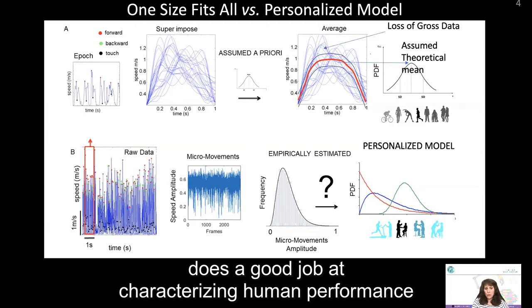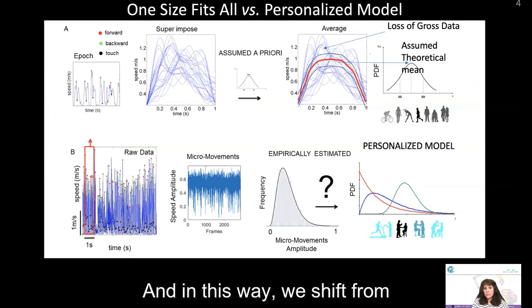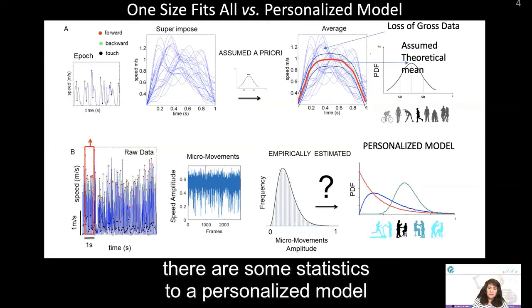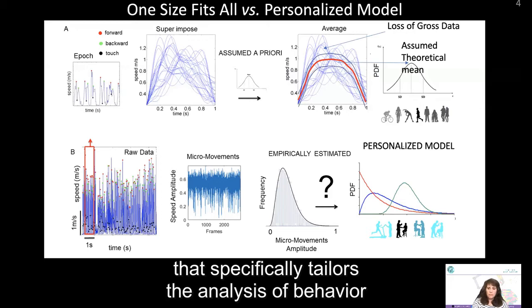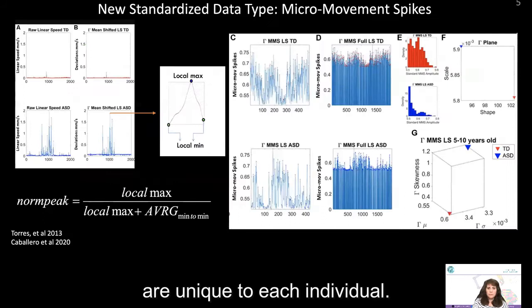Spikes are derived from peaks in the raw data. We apply these to all sorts of different sensors and different biorhythms from the nervous system, group them in a frequency histogram, and use maximum likelihood estimation with 95% confidence intervals to empirically estimate a continuous family of probability distribution functions. We found that the gamma family does a good job at characterizing human performance in general. In this way, we shift from a one-size-fits-all approach to a personalized model that specifically tailors the analysis of behavior to stochastic signatures unique to each individual.